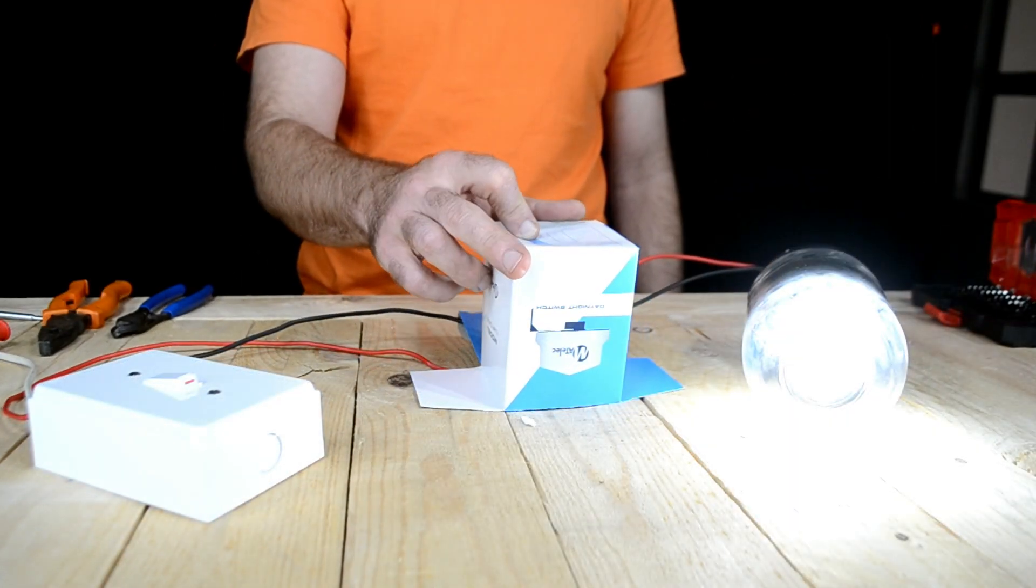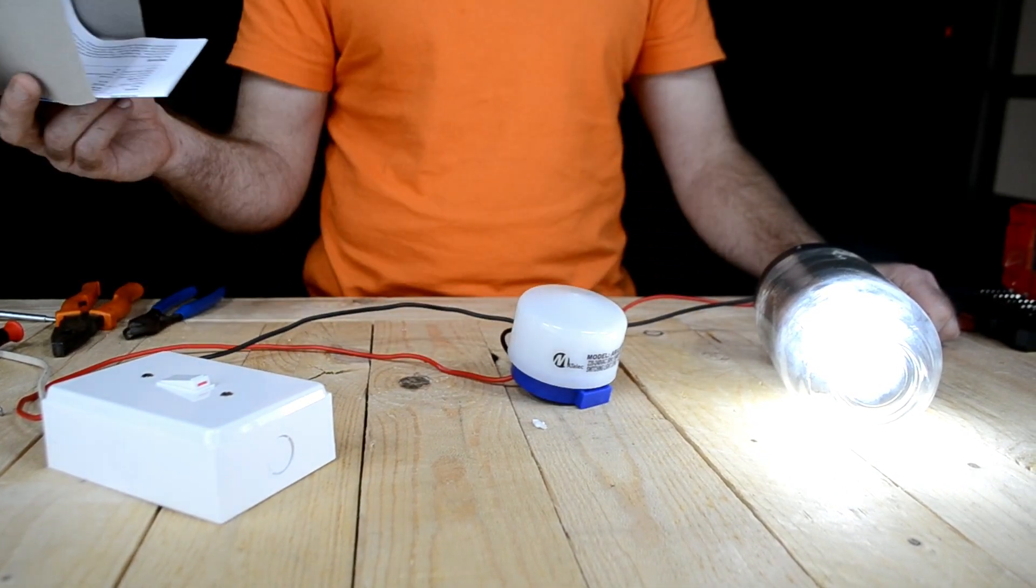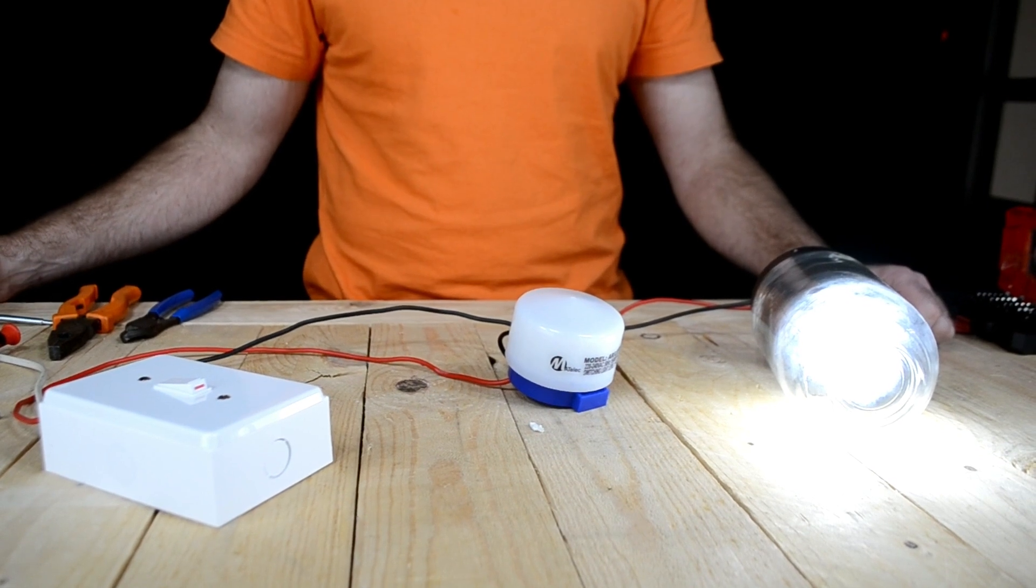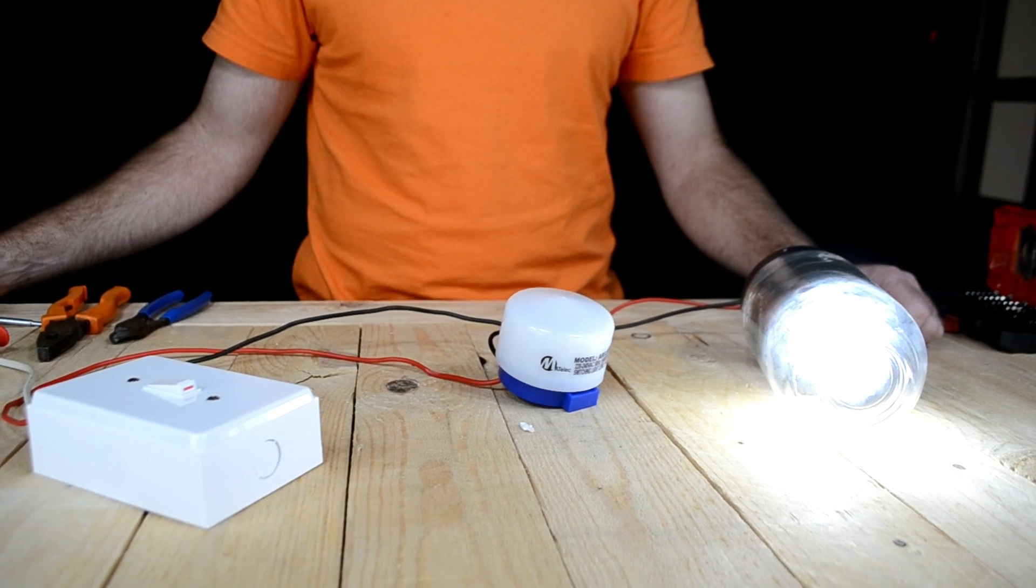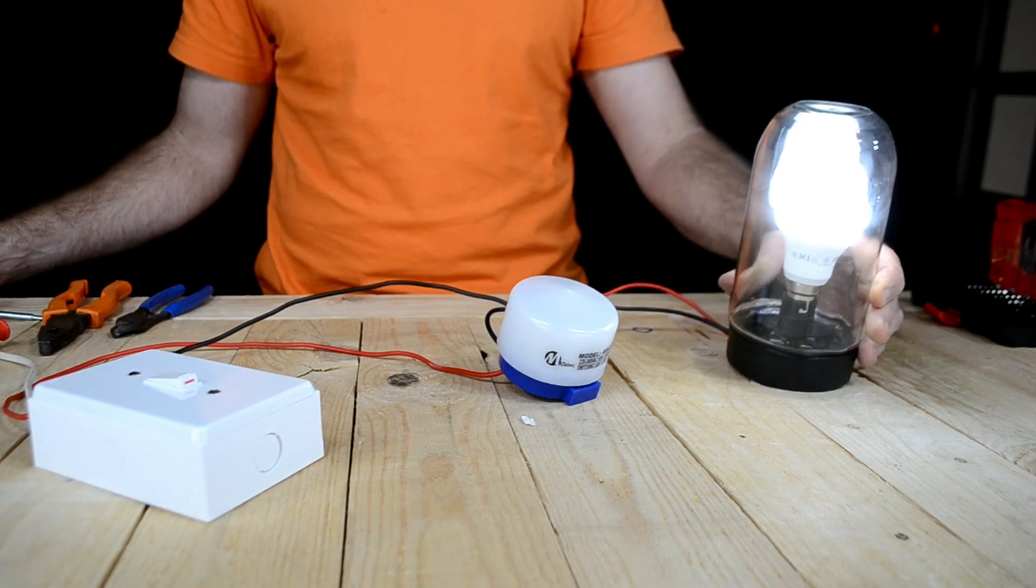There we are. Okay, now just to finish off, to get the point across, if I take the box off, back to daylight, the Lux sensor will sense the ambient light and switch it off in the same reverse fashion.